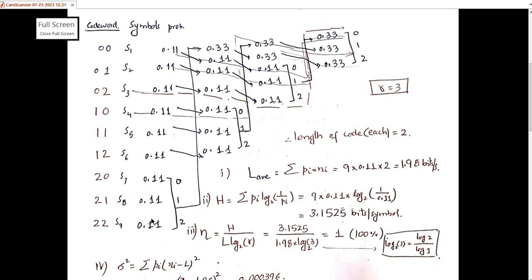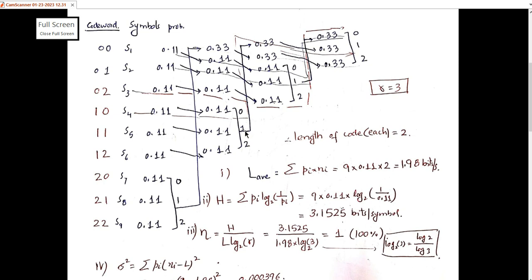For the ternary code, we combine the last three symbols' probabilities and assign 0, 1, and 2 to them. The combined result should be taken as high as possible, giving 0.33. We then rearrange the remaining probabilities and again combine the next three, assigning 0, 1, 2, with the combined result 0.33 moved as high as possible.